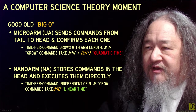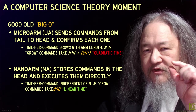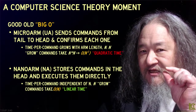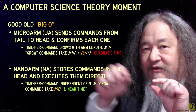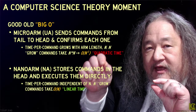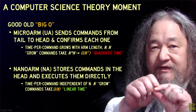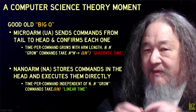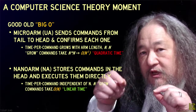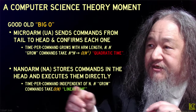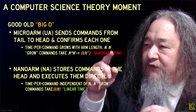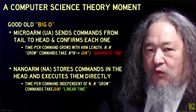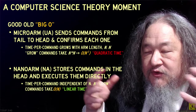The micro-arm, abbreviated UA. The way it works, the source of the code is at the tail, and it sends a command down to the head of the arm, which does it and sends a confirmation back and so on. As a result, the time per command grows with the arm length because it has to do a round trip each time. So if you have n commands and n time per command, you get quadratic n-squared time.